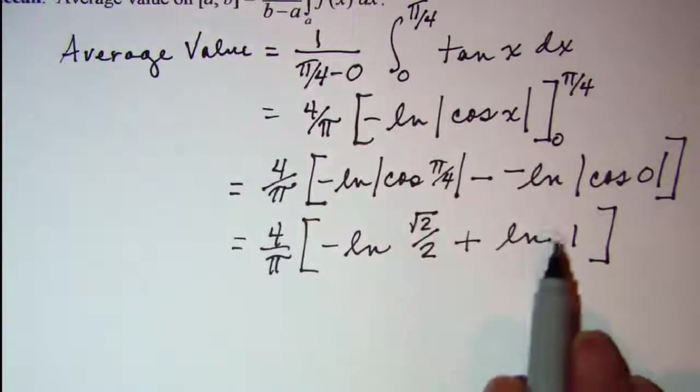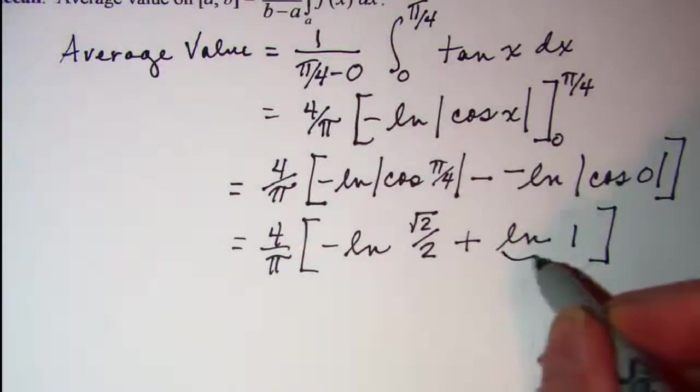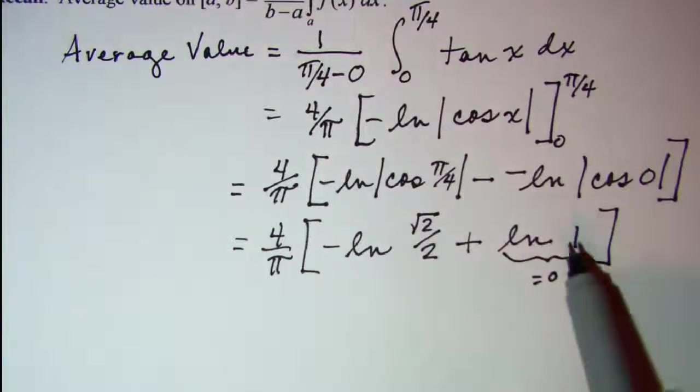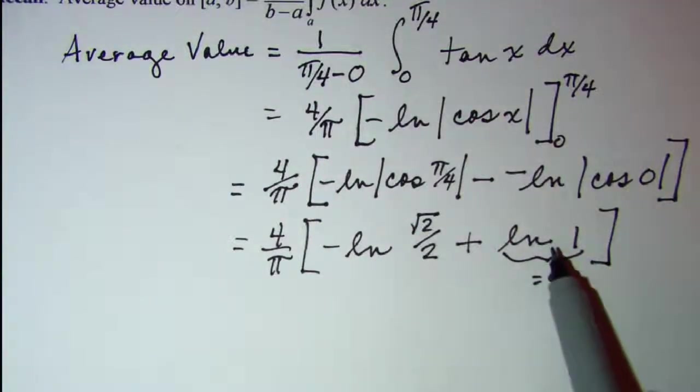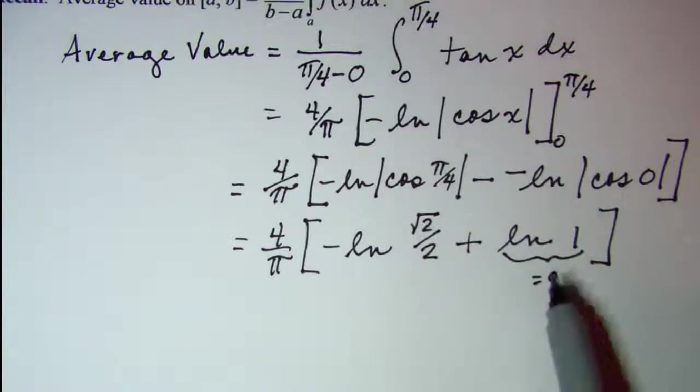Now we know that ln of 1 is 0. If you've forgotten that, remember that the base of our ln is e, and we want to ask ourselves e raised to what power gives us 1. So the exponent has to be 0.